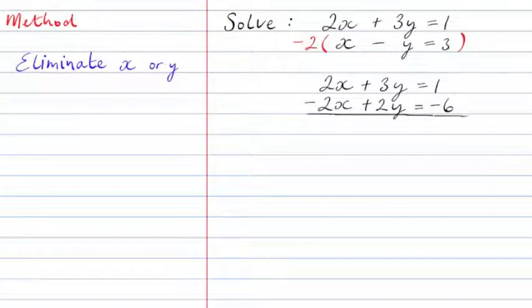And here we see if we add these two equations, 2x minus 2x is 0. They cancel out, which is what we wanted. We've eliminated the x's. 3y plus 2y is 5y and 1 minus 6 is minus 5. Dividing both sides by 5, we see that y equals minus 1. We're halfway there.